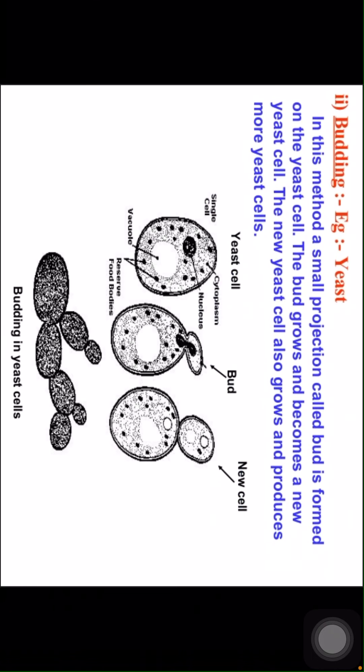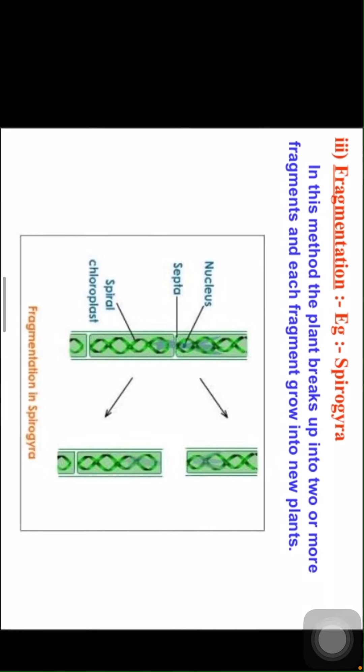The second method is budding. Example: yeast. In this method a small projection called a bud is formed on the yeast cell. The bud grows and becomes a new yeast cell. The new yeast cell also grows and produces more yeast cells. Observe the figure showing budding in yeast cells.